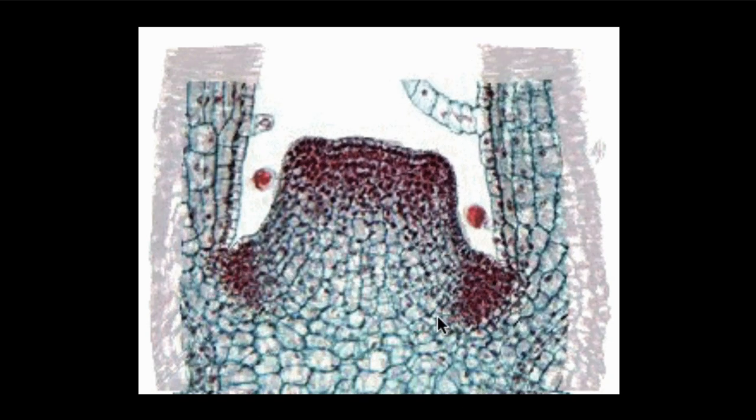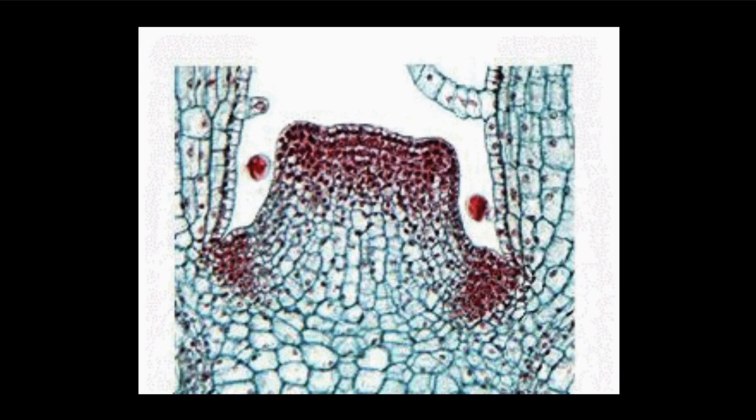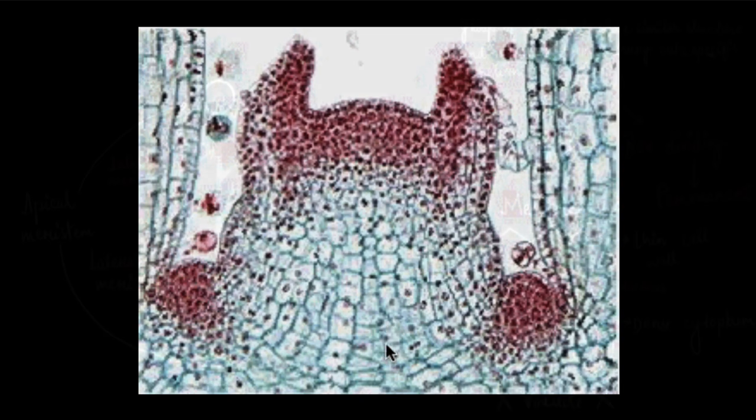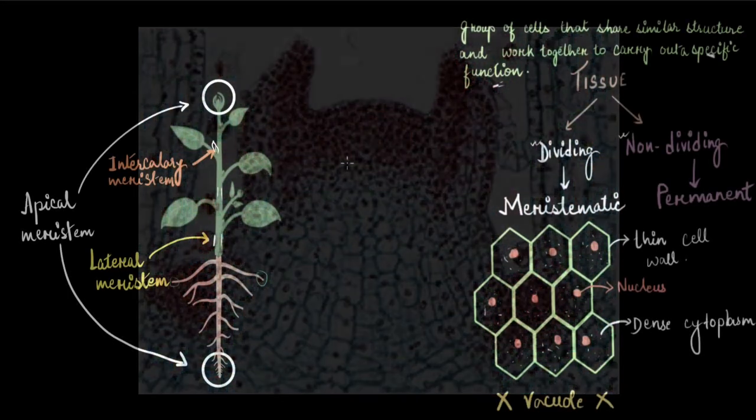As you see this shoot tip growing, these darker or reddish areas are getting restricted to these corners, and these corners give rise to those intercalary meristems later in the plant body, because these are where the leaves and new branches will grow from. The red colored part is located on the tip of the shoot which helps them to keep growing tall. This is how meristematic tissue gets distributed in different body parts of the plant.